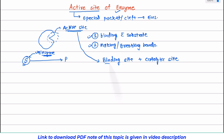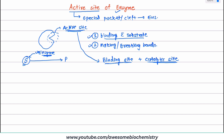Remember, the terms binding site, catalytic site, and active site are all different. The binding site is for binding with the substrate, whereas the catalytic site is where actual catalysis occurs — that is, mostly making or breaking bonds. This combination of binding site and catalytic site makes up the active site.